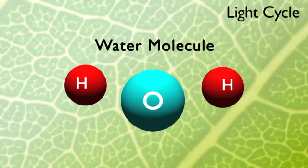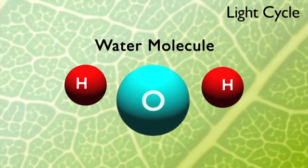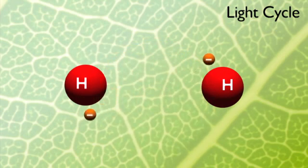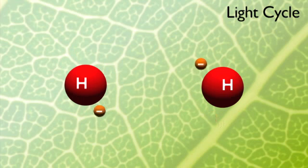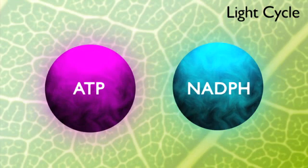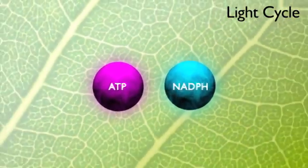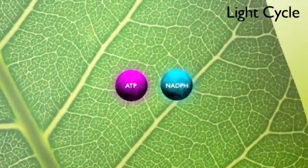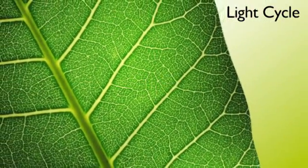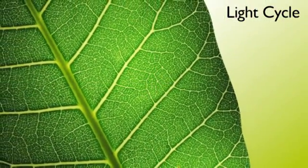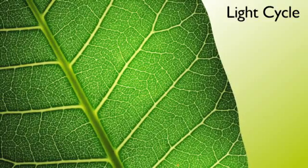The oxygen is a waste product and leaves the plant as oxygen gas. But the electrons and hydrogen create two energy-carrying molecules, ATP and NADPH. Therefore, the light reaction changes light energy into chemical energy, which is necessary for the next part of photosynthesis.